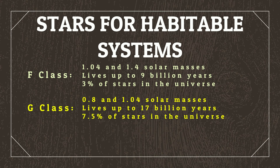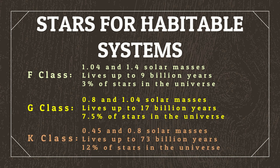G class stars, like our own yellow sun, make up around 7.5% of stars in the universe, weighing in between 0.8 and 1.04 solar masses, with lifespans up to 17 billion years — making it possible for G class stars formed at the beginning of the universe to still be around today. K class stars are orangey-yellow, fitting between 0.45 and 0.8 solar masses, with incredible lifespans up to 73 billion years, and making up around 12% of the stars in the universe.